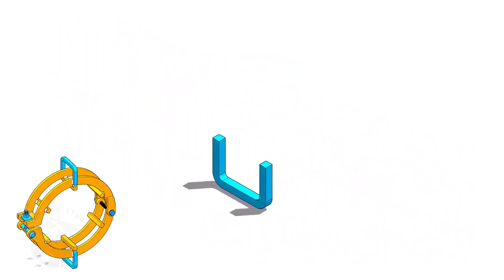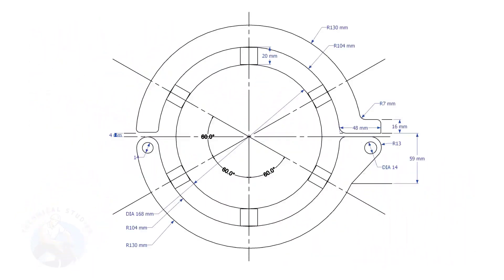Let us make the different parts of the pipe clamp. This is the main part of the clamp. I will explain to you how to layout this.